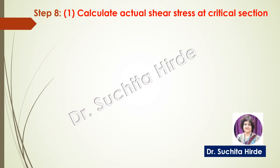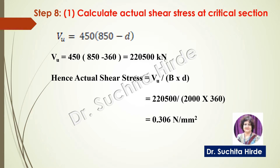To calculate the actual shear stress at the critical section, we first calculate the actual shear force. Substituting the effective depth as 360 millimeter, we get the actual shear force as 220,500 newton at the critical section. Shear stress equals force divided by area, where area is b into d with d being the effective depth. We get actual shear stress tau_v as 0.306 newton per millimeter square.